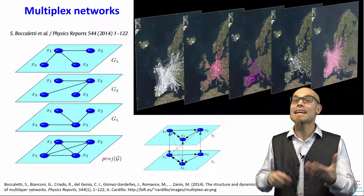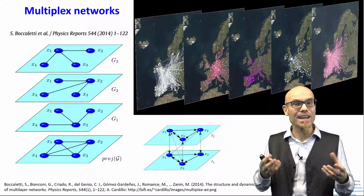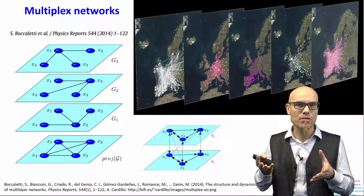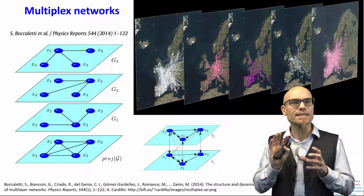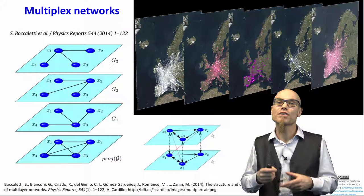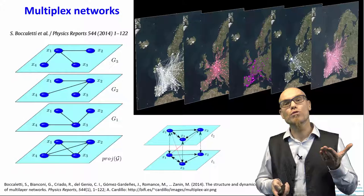A multiplex network of Europe, for example, might include transportation, telecommunication, air, train, and car networks as different layers. The nodes remain stable across layers, but different kinds of connections link them. You can draw these layers together and see how they complement each other. Again, the choice of what to include and how to represent it is very much in the eye of the beholder — what distinguishes great researchers is their ability to represent reality in an extremely useful and insightful way.